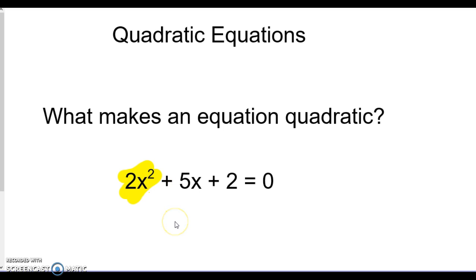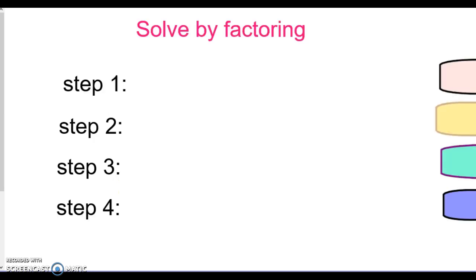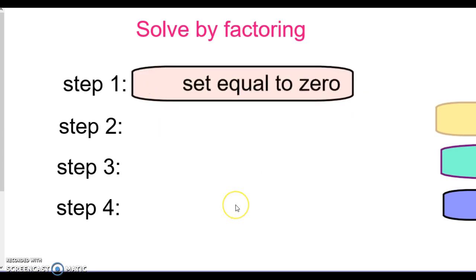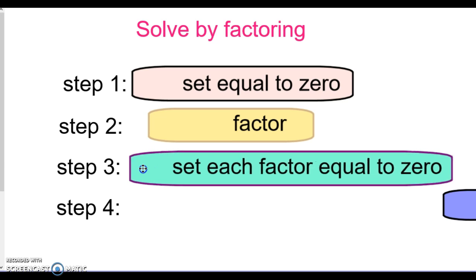There are several ways to solve quadratic equations. So far we have only learned one: solving by factoring. Step one is to set your equation equal to zero. Step two is to factor. Step three, you set each factor equal to zero. And the final step is to solve each of those equations.